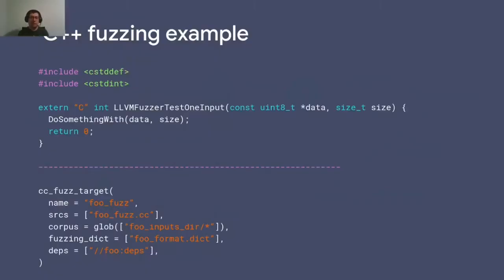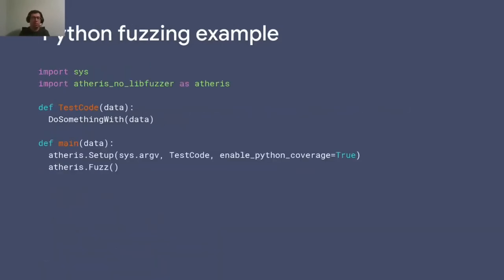Here is an example of fuzzing in TensorFlow using LLVM fuzzer. We define the function LLVMFuzzerTestOneInput, which has two arguments: a buffer called data and the size of the buffer. This buffer is the random input given to the fuzzer, and we call the API with this buffer and its size. TensorFlow uses Bazel for building, so we also write a build file using the cc_fuzz_target macro — there is nothing else to do. We also have support for fuzzing TensorFlow via Python, where we set up the Atheris fuzzer, pass the function that receives the random buffer and does something with it, and then call the fuzz function from Atheris.